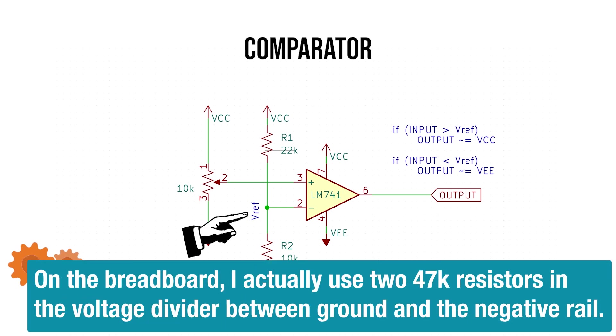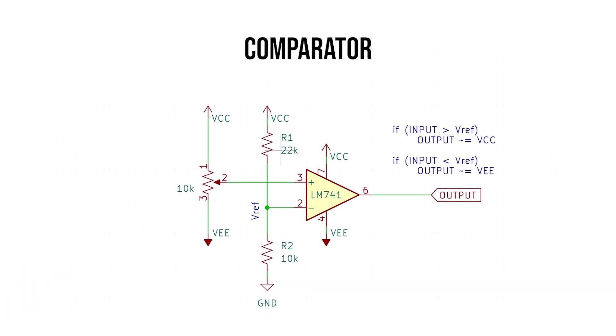The third circuit is the comparator. As the name implies, we're comparing two voltages at the inputs of the op-amp. We need a reference voltage, so we'll use a voltage divider connected to the inverting pin. When our input voltage gets above the reference voltage, the output slams high. When our input is less than the reference, the output slams low. Let's see it in action.